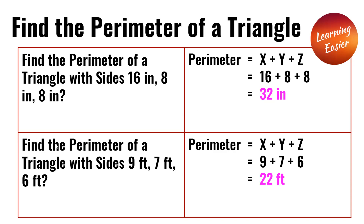Find the perimeter of a triangle with sides 9 feet, 7 feet, and 6 feet. 9 plus 7 plus 6 is 22 feet, and 22 feet is the perimeter of this triangle.